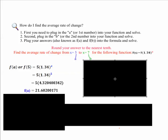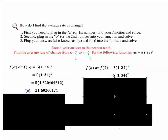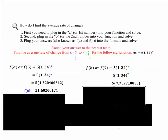So you're going to plug it in to where the exponent is, and you get 5 times 1.34 to the seventh power. Make sure you do the exponent first, do not round. So you get 5 times 7.757710855, then you get that as a total answer.